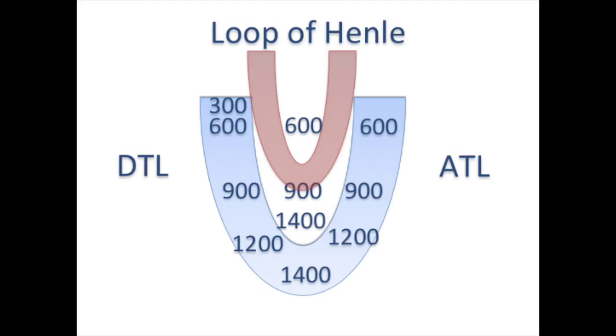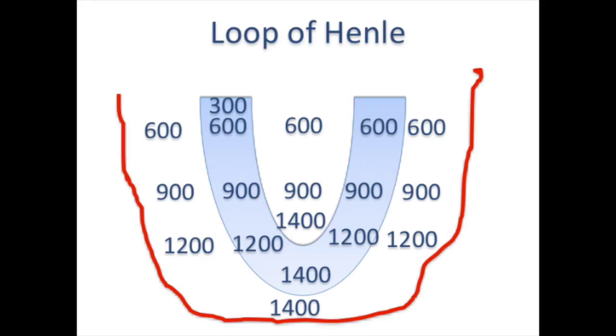The solutes from the interstitium enter into the vasa recta as they dip down into the medullary interstitium, and the solutes move out as the vasa recta moves out of the medullary interstitium. In this way, the vasa recta maintains the already formed counter current multiplier system by the loop of Henle.